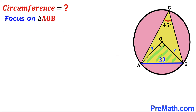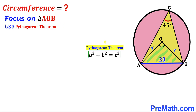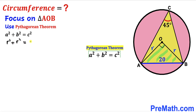Let's focus on triangle AOB. We can see that this is a right triangle since this angle is 90 degrees, and we are going to apply the Pythagorean theorem. The Pythagorean theorem states: A squared plus B squared equals C squared. In our case, our hypotenuse is 20 and our two other legs are both lowercase r. So we have r squared plus r squared equals 20 squared.